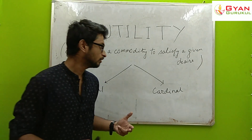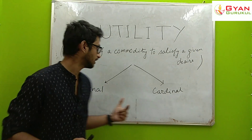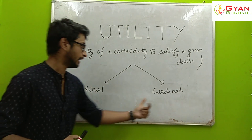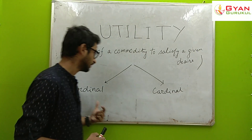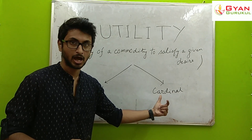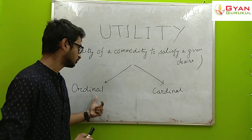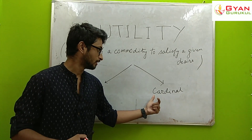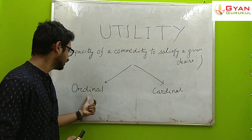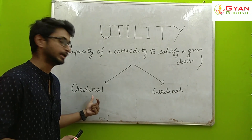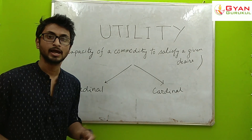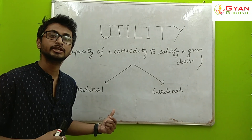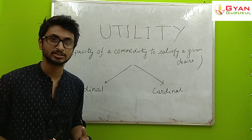Now, utility is basically of two types: Ordinal and Cardinal. The Ordinal Utility concept is associated with Hicks and Allen, and the Ordinal Utility analysis uses the Indifference Curve approach.